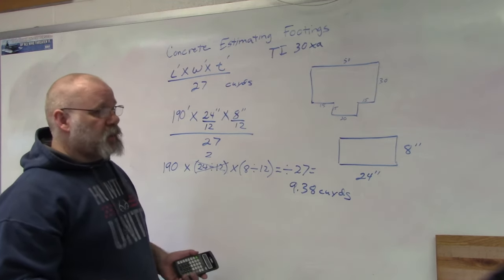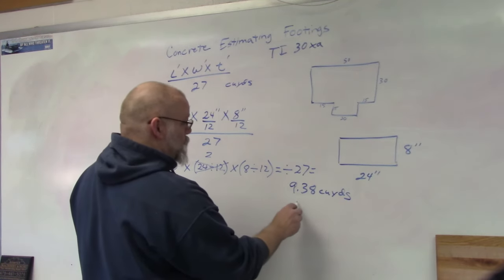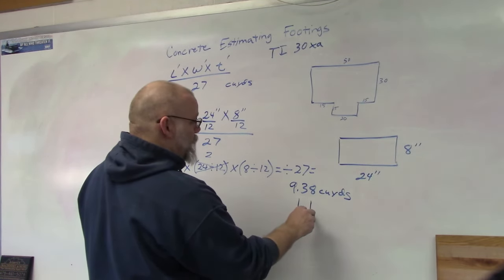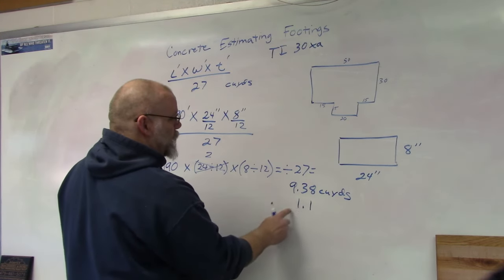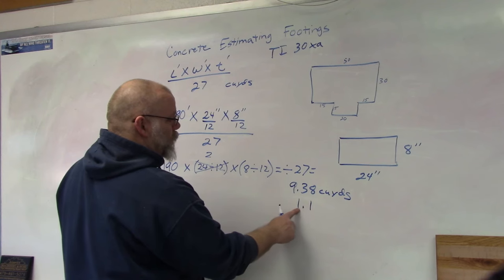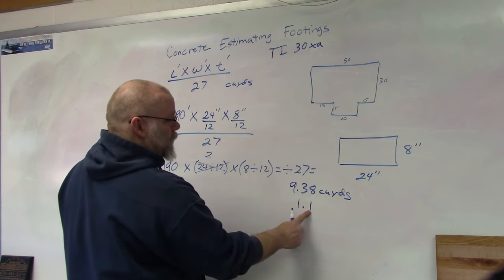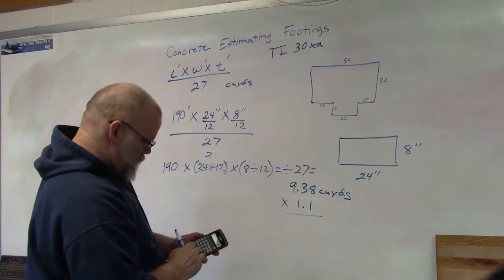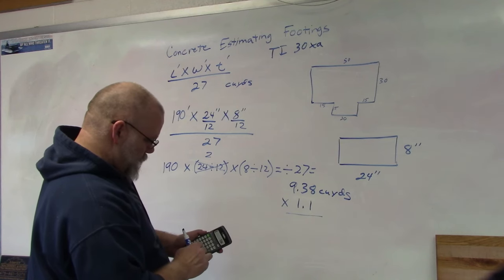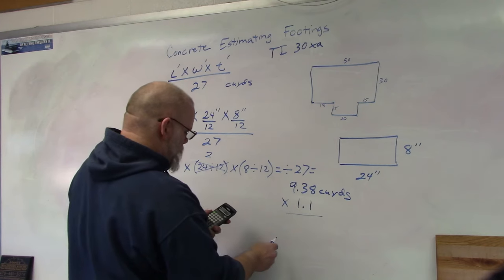So for this, we'll just add 10% waste. So I'm going to multiply 9.38 times 1.1. The 1 just means 9.38, and the 0.1 is the waste. So 9.38 times 1.1 equals 10.32 cubic yards.